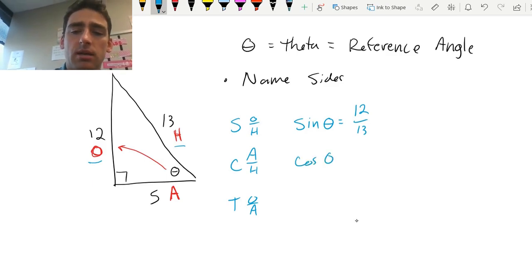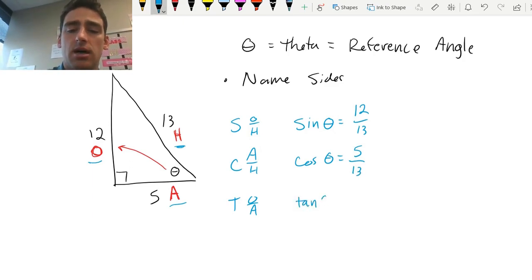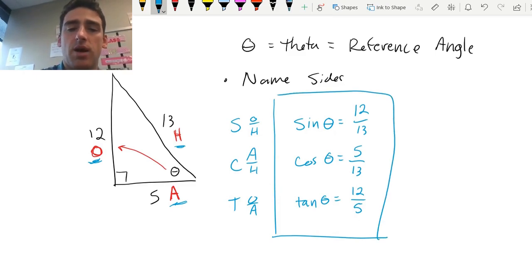Cosine of theta is adjacent divided by hypotenuse. That's from the CA. That's going to be 5 divided by 13. And tangent of theta is TOA. So that's opposite divided by adjacent. So that's going to be 12 over 5. So those are my three sets of relationships for this specific triangle